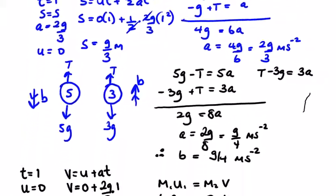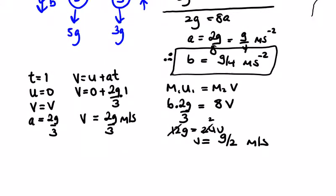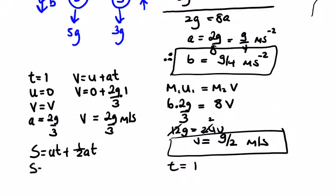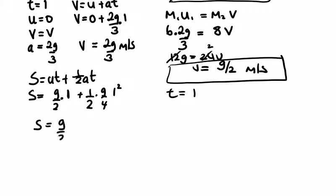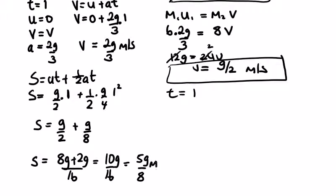We're looking for the distance the 5 kg will fall in the second second. We have the second second, t equals 1, our new acceleration and new speed. So s equals ut plus half at squared. The distance traveled is g over 2 times 1 plus half times g over 4 times 1 squared. We get g over 2 plus g over 8, which is 8g plus 2g over 16, 10g over 16, which is 5g over 8 meters.